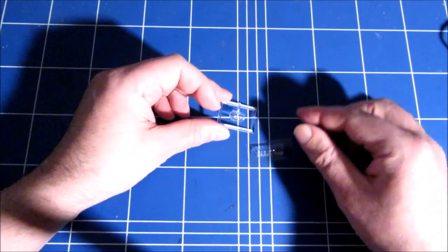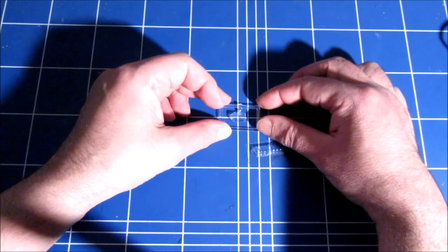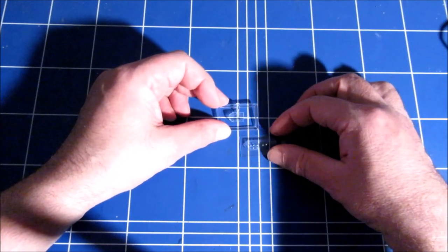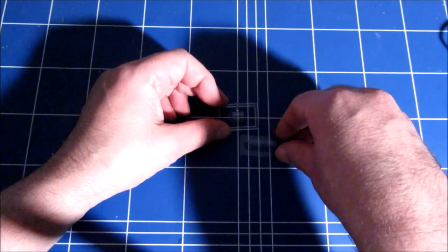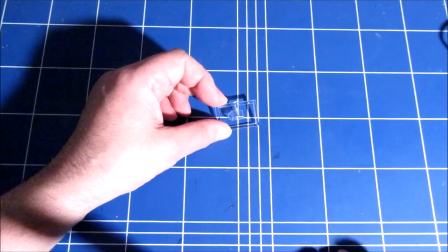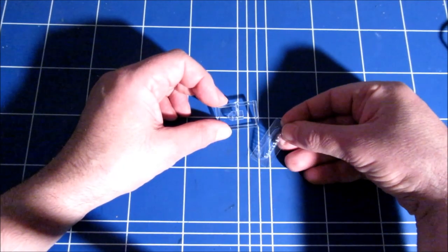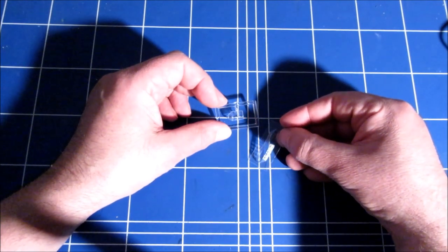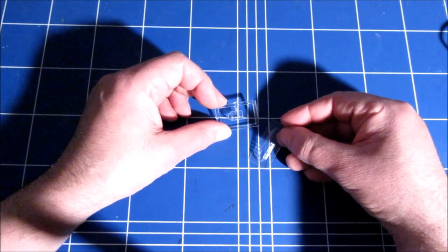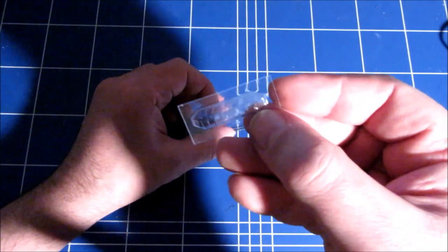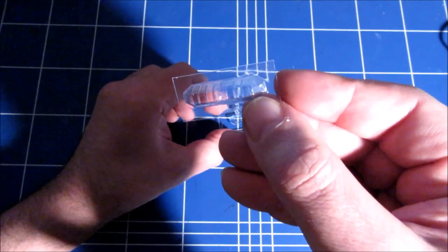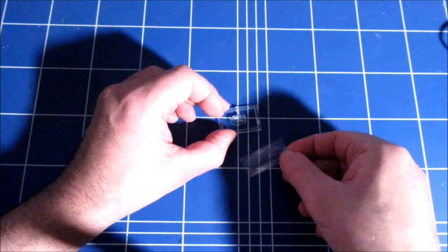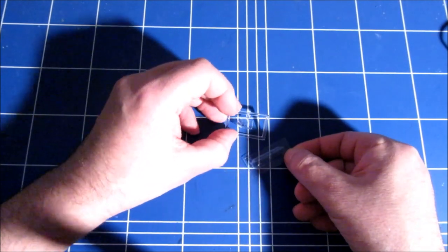There is some distortion, which is a bit less with the... oop, with the vacform canopy. But the vacform canopy has a bit of a bubbly structure in it, so they both distort a bit.